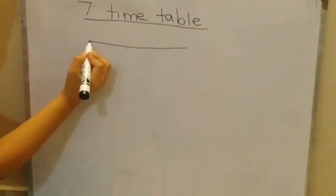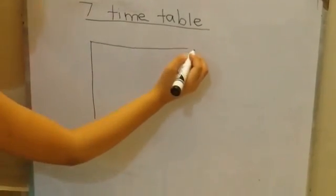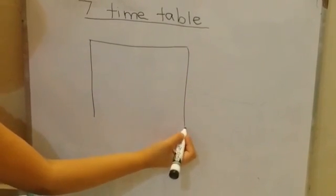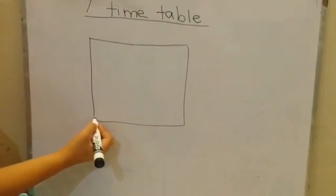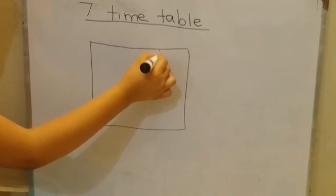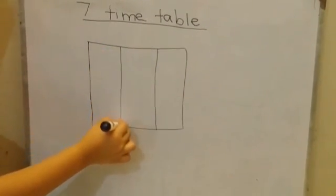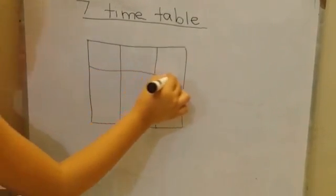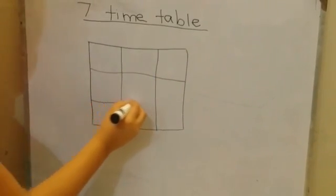Okay, so let's start with this topic which is seven time table's trick. The first step that you need to do is we are going to make this grid. We are going to make 3 columns and 3 rows like this.